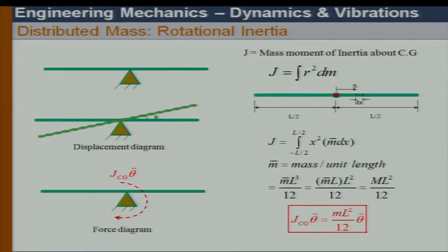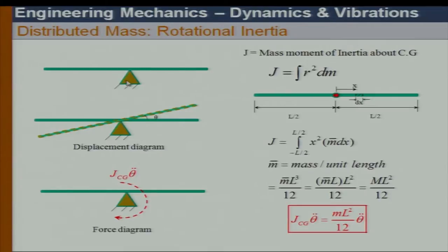Now we are coming to the rigid body. We are going to study planar motion of a rigid body. For a bar rotating about its center, we can calculate the mass moment of inertia about the CG using the definition: integral of r² dm.